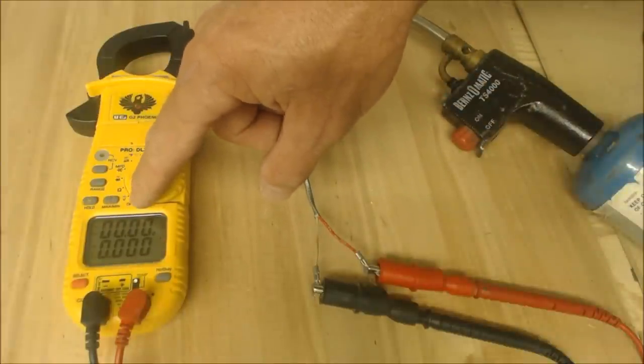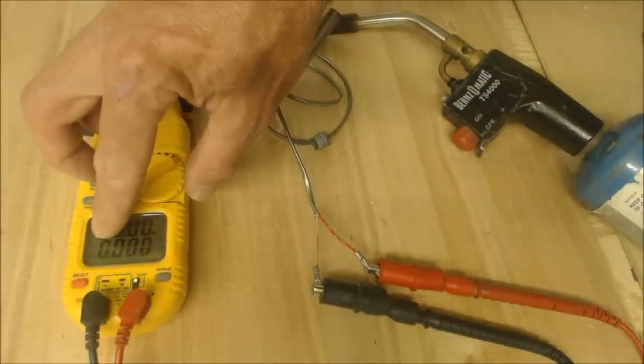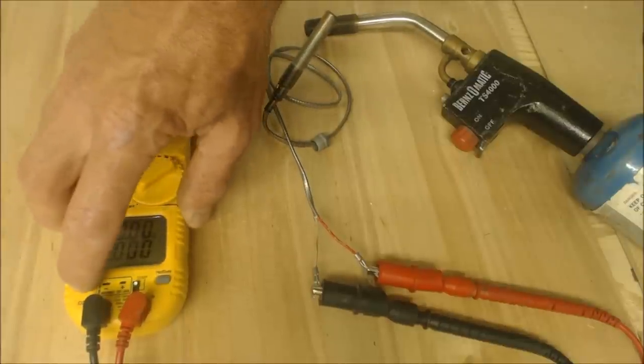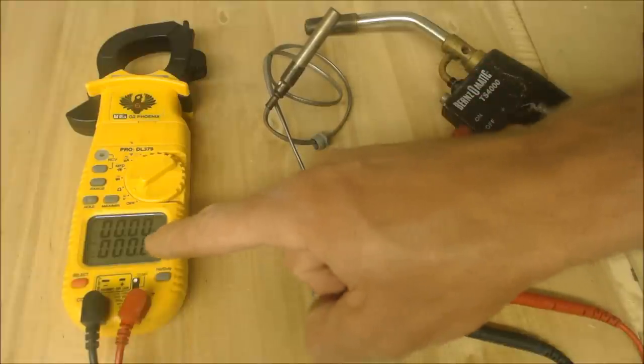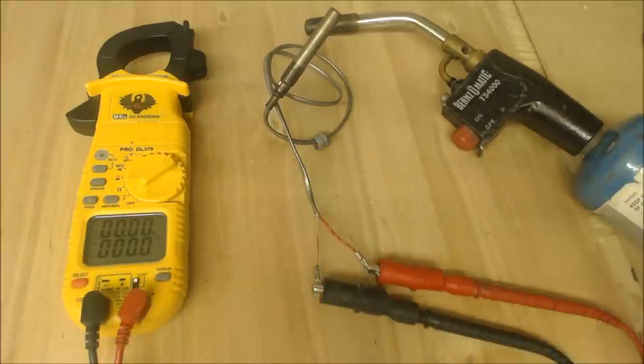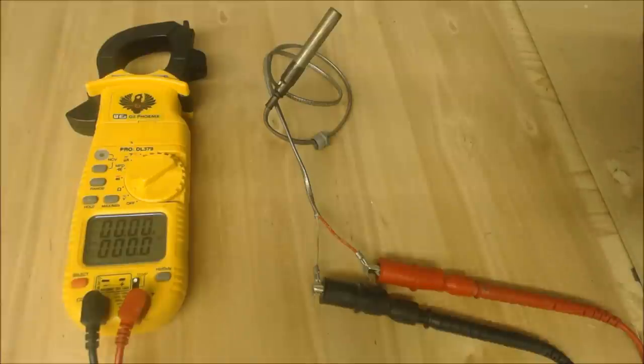We turned the multimeter onto volts and right now we're on AC. So we're going to press the select button and now we are on DC volts. Right now you see MV, so that is DC millivolts. I'm going to go ahead and heat this up.